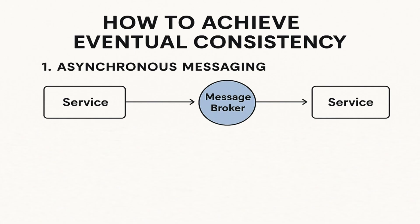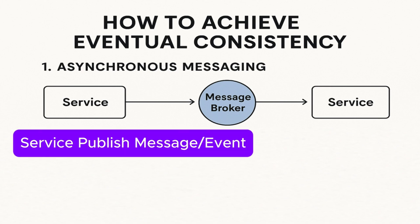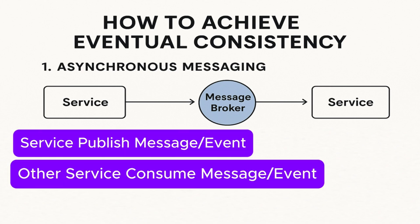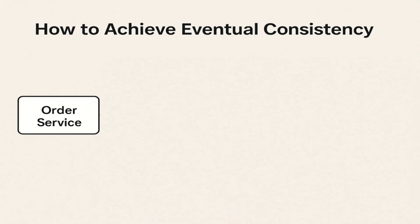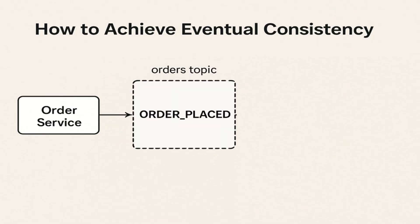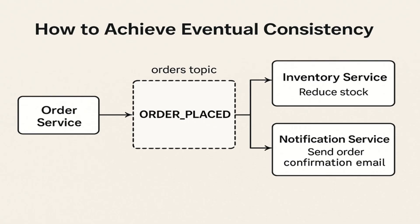The first pattern is asynchronous or event-driven messaging. Instead of waiting for a response, we use a message broker as middleware. We publish a message to a Kafka topic, and other services consume that message and process accordingly. This means the calling service can move on and the rest of the processing happens eventually in other services. For example, when the order service places an order, it publishes an event to the orders topic with the status 'order placed,' and then the inventory and notification services consume that message to reduce stock and send the order confirmation email. This is also the basic idea behind the Saga design pattern.